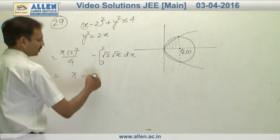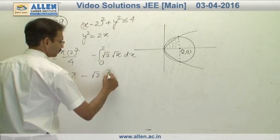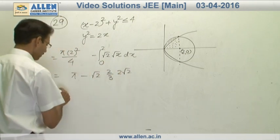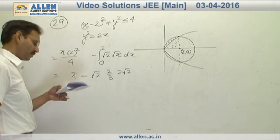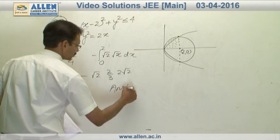It is π. This is 2 by 3 times x power 3 by 2. x power 3 by 2 gives us 2 root 2. Now this is π minus 8 by 3 and π minus 8 by 3 is the third option. So the answer is 3.